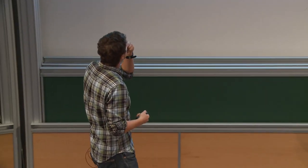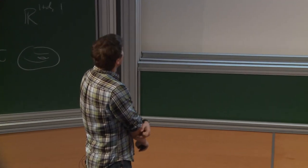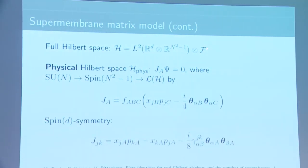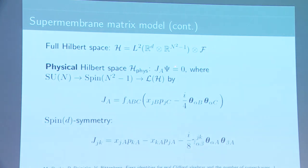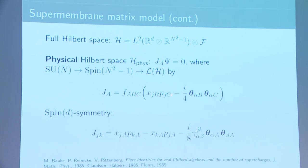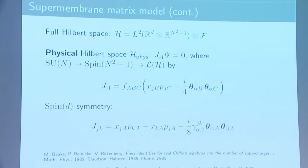Our full Hilbert space is then the bosonic Hilbert space tensored with the fermionic Fock space, where we have represented these Clifford algebras. There is again a physical Hilbert space where the constraints vanish — not only the bosonic sector but also the fermionic part. This is imposed as a constraint that we should be in the kernel of these operators, but we still have a symmetry — a rotation or Spin(d) symmetry acting essentially by rotation among the coordinates and also on the Clifford algebras or on the fermionic Fock space.